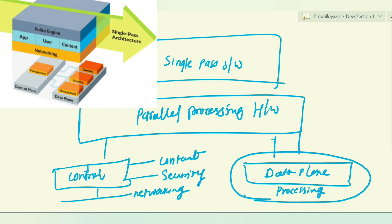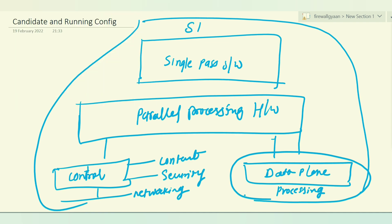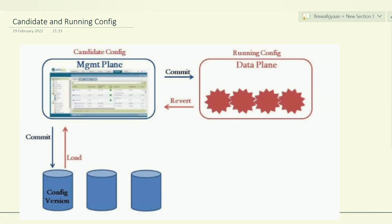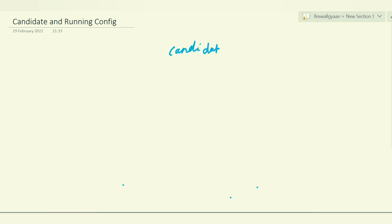This combined thing they call the SPC architecture. Now when we talk about configuration, Palo Alto is designed in such a way that whenever you create any configuration or perform any changes, it goes into the candidate config. Once the changes from the candidate config are committed, they go to the running configuration.